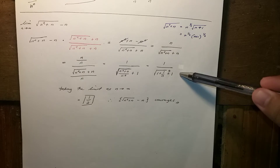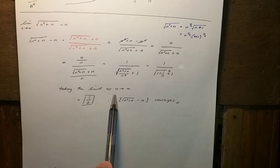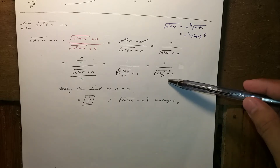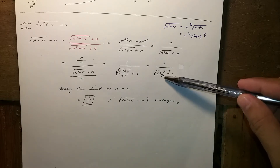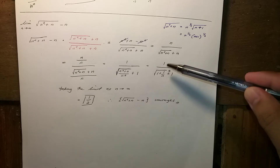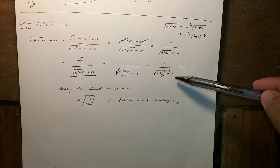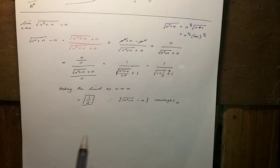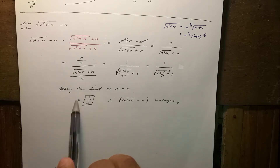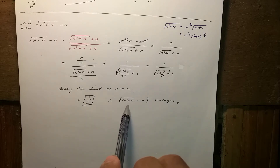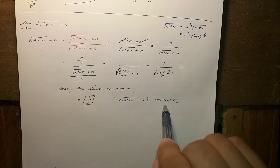Taking the limit as n approaches infinity, this term will become 0, and we have 1 plus the square root of 1, which is 1 plus 1. So we arrive at one half. Therefore, since we have a finite value, the sequence converges.